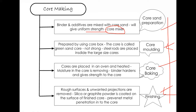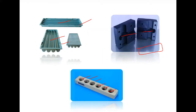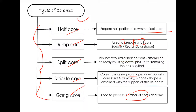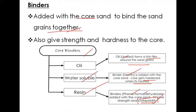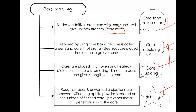For core molding, you use any one of the core boxes — half, dump, split, strickel, or hand core box — based on requirements. The core at this stage is called the green sand core, which is not strong. For large-size cores, steel rods are placed inside to improve strength and hardness. For small-size cores, steel rods are not necessary.